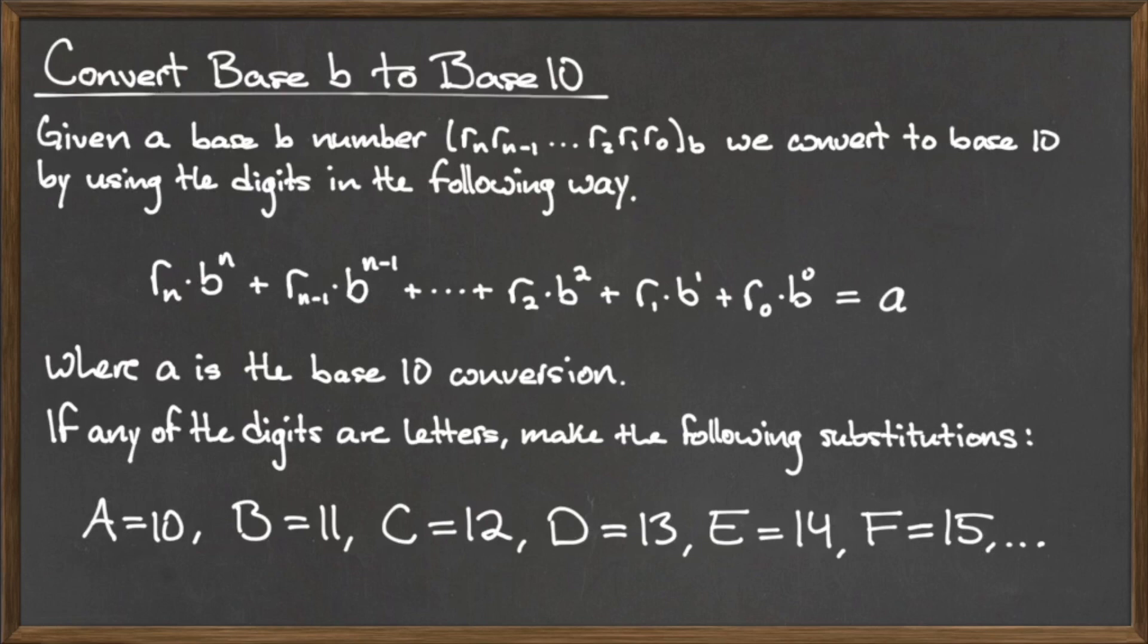It is for this reason that we restrict ourselves to bases that are no larger than 36. There are 9 unique numbers that we can use, 0 through 9, as well as 26 unique letters of the alphabet, for a sum of 36 unique characters.